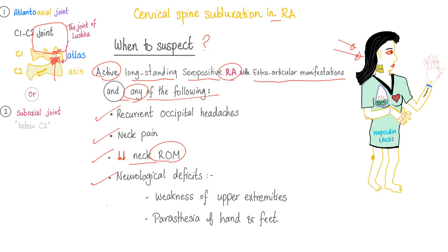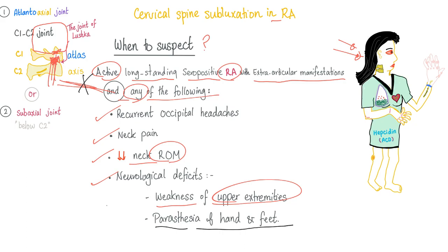Neurological deficits — why? There's a spinal cord here, and the inflammation can lead to weakness of the upper extremities because the nerves don't have enough supply. Paresthesia of hands and feet — think of it as the mnemonic of twos: tingling and numbness, pins and needles, limb is asleep, and formication — the sensation of crawling insects on your skin, common after substance abuse.